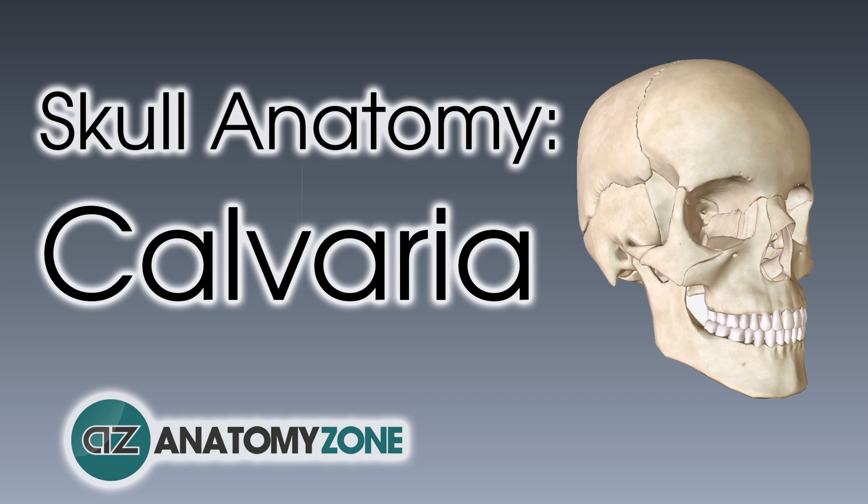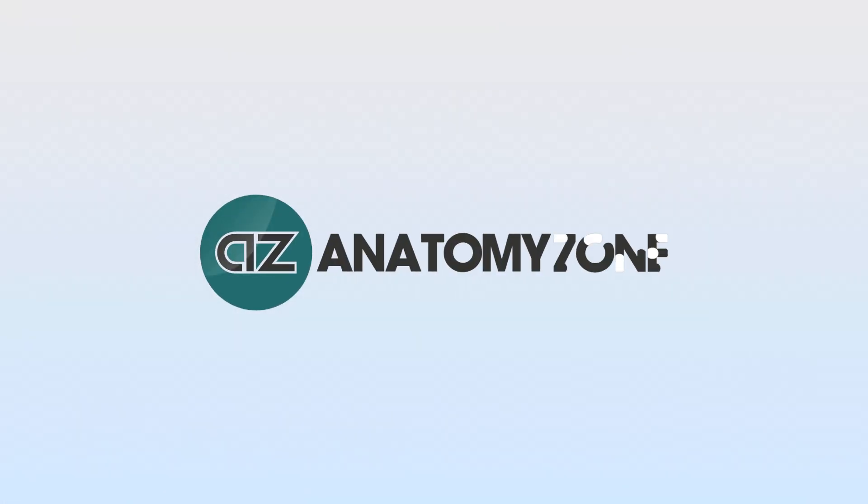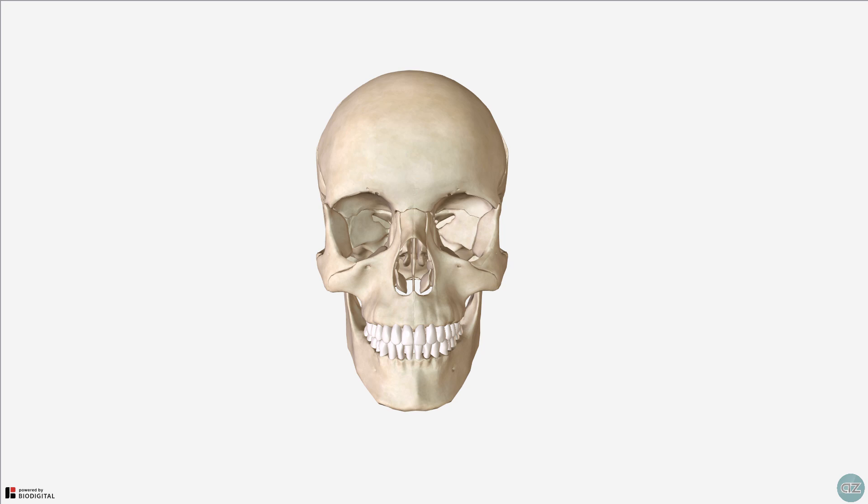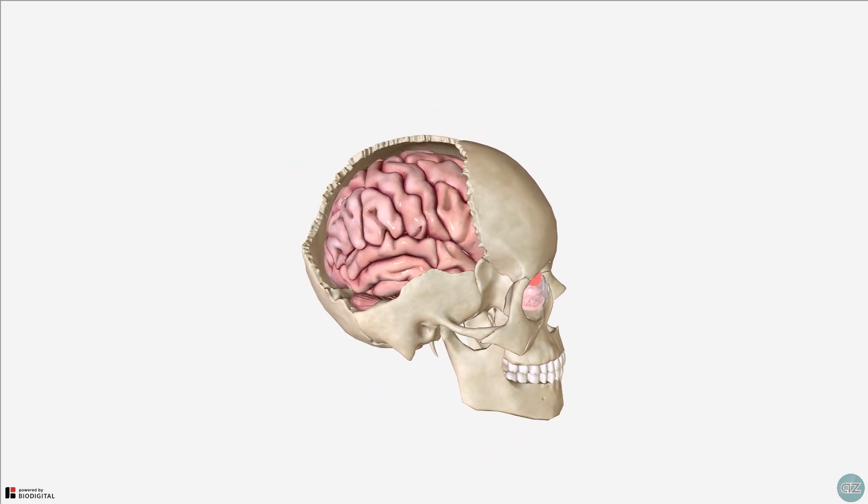Hi, this is Peter from AnatomyZone. This is the first tutorial in a series of the anatomy of the skull, in which we'll be learning about the bones of the calvaria. So the skull has 22 bones which support the structures of the face and provide a protective cavity for the brain.